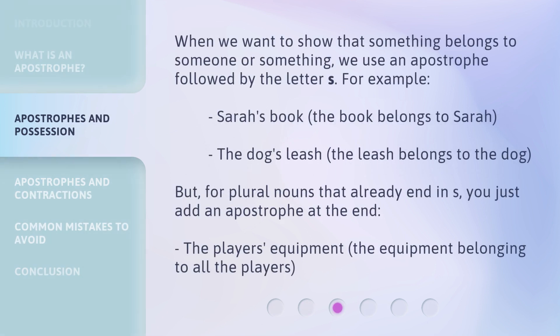When we want to show that something belongs to someone or something, we use an apostrophe followed by the letter S. For example, 'Sarah's book' — the book belongs to Sarah. 'The dog's leash' — the leash belongs to the dog. But for plural nouns that already end in S, you just add an apostrophe at the end. For example, 'the players' equipment' — the equipment belonging to all the players.